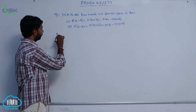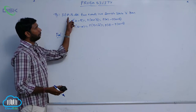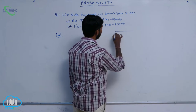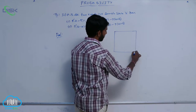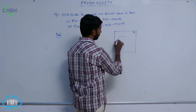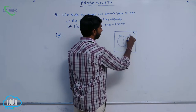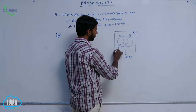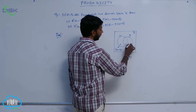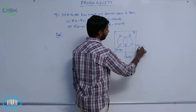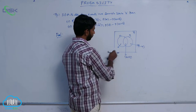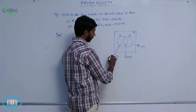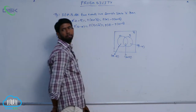Proof. Given: A and B are 2 events in a sample space. Draw the diagram. This is a sample space with two sets, capital A and capital B. The common part is A intersection B. This region represents A minus B, and this region represents B minus A.